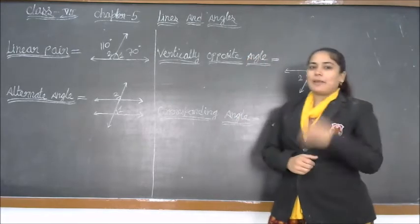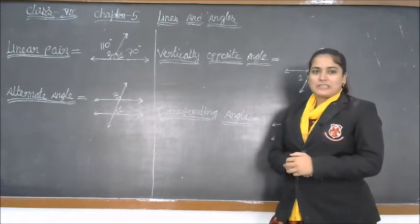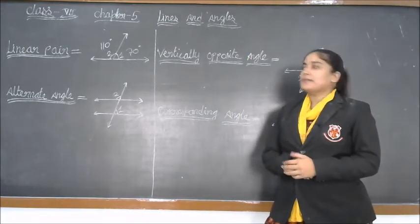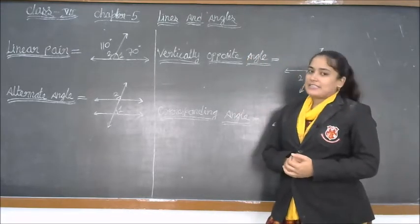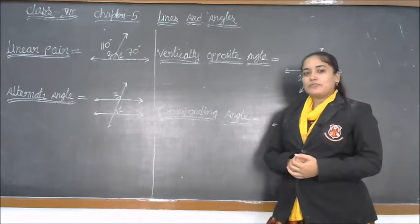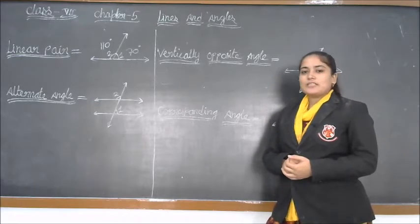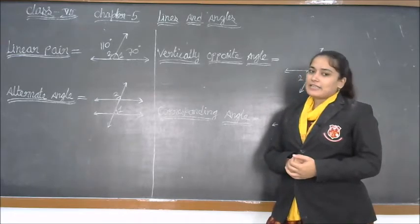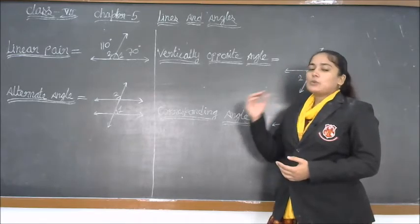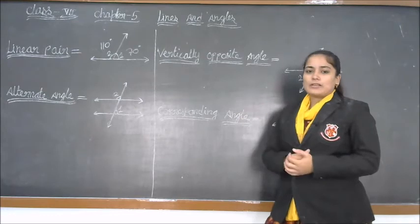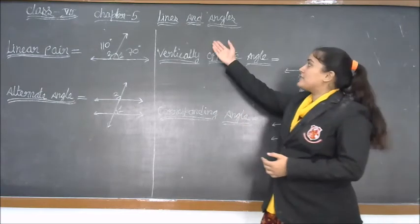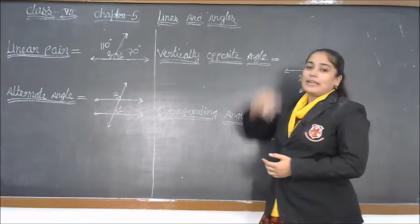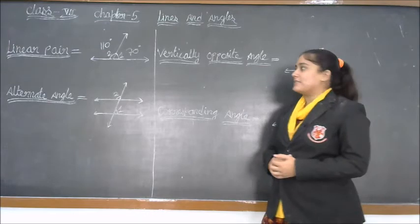In this chapter, there are four main basic concepts: linear pair, alternate angle, vertically opposite angle, and corresponding angle. All four figures are very helpful to understand lines and angles.